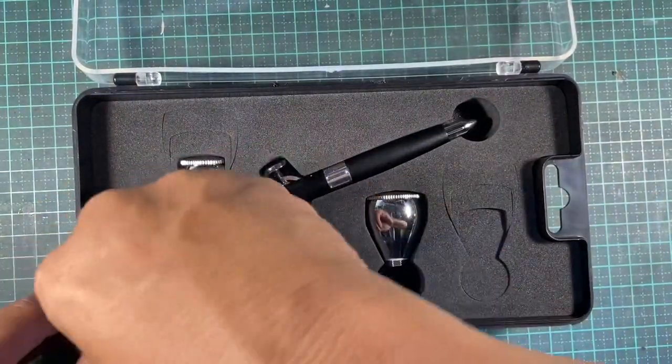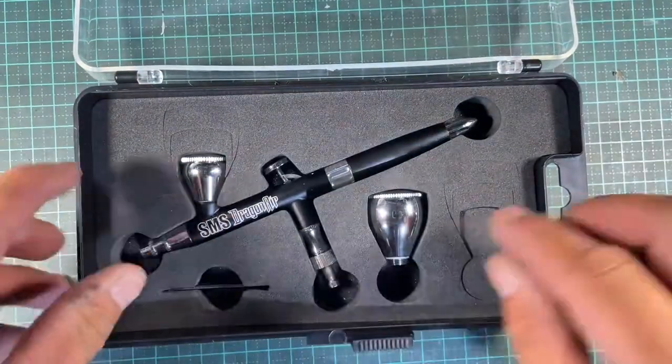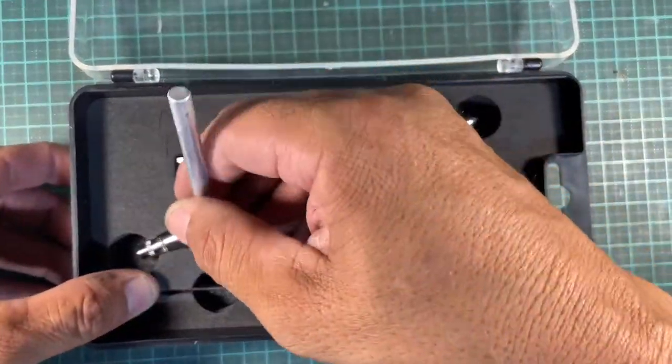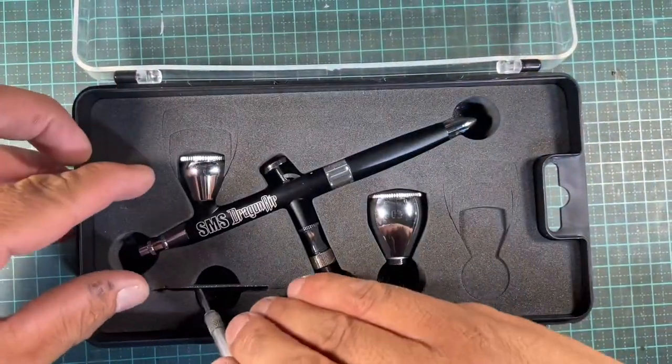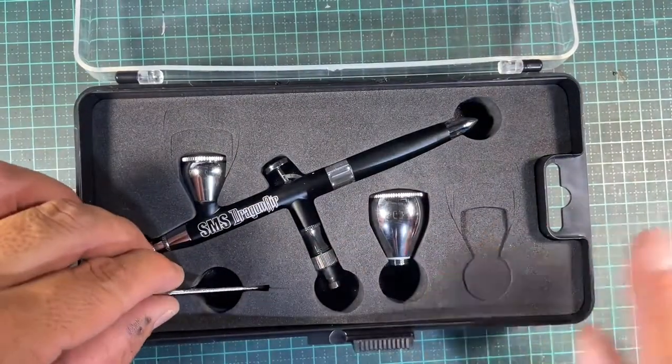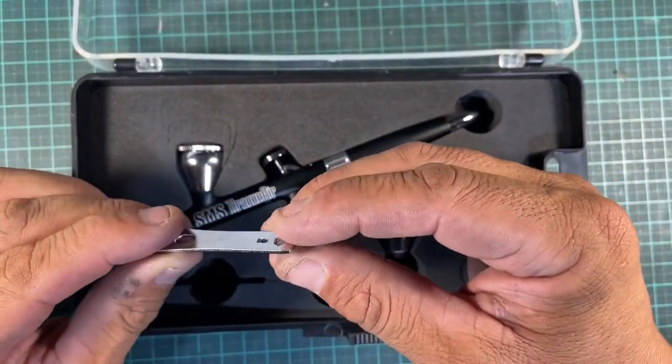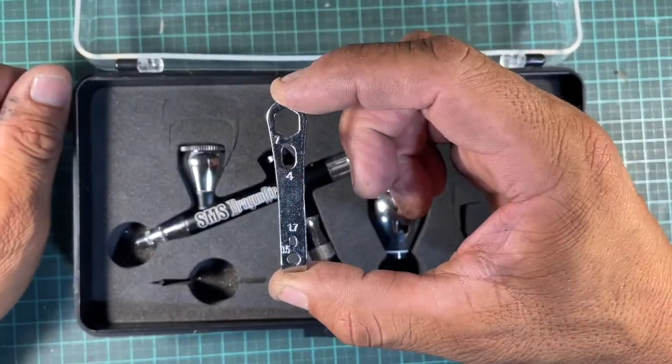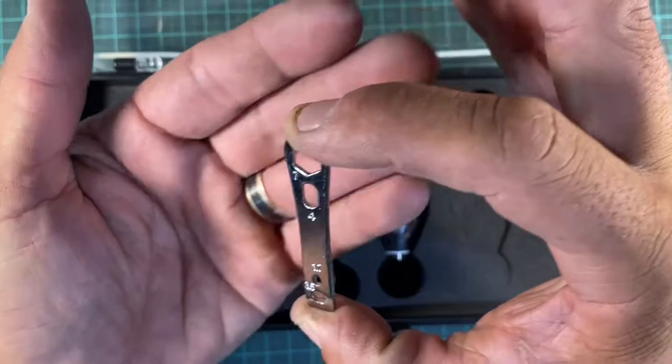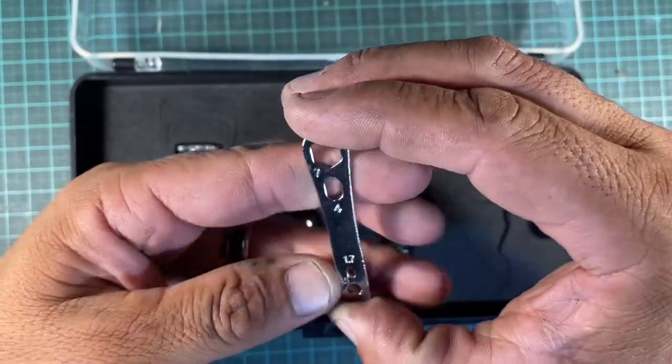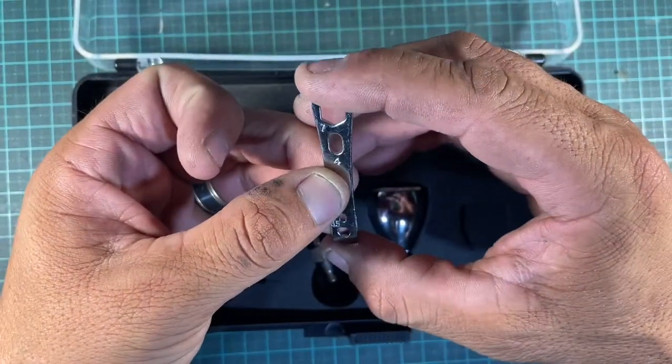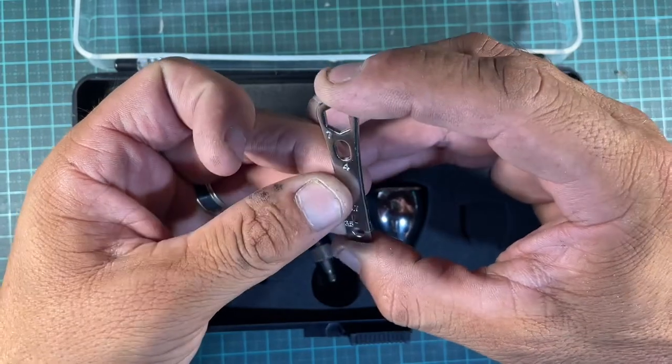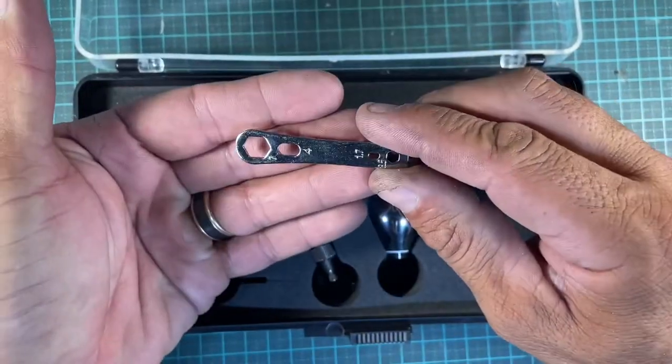Also it comes with a, that's what I'm saying, this packaging is unreal. It actually takes a bit of work to get this stuff out. So you've got a wrench. So that's to service the airbrush like so. You've got 3.5, you've got a 1.7, you've got a 4 and a 7.